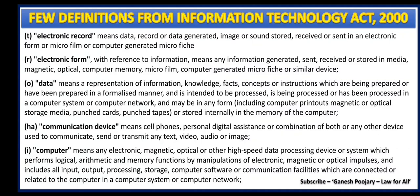For the benefit of those listening to this video, I will read out these five important definitions. The first one, Section 2 clause T, discusses electronic records, which means data, record or data generated, image or sound stored, received or sent in an electronic form, or microfilm, or computer generated microfiche. Section 2R discusses electronic form — with reference to information, it means any information generated, sent, received or stored in media: magnetic, optical, computer memory, microfilm, computer generated microfiche or similar device.